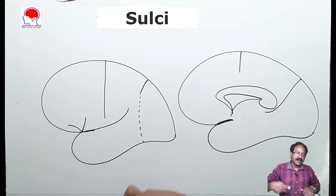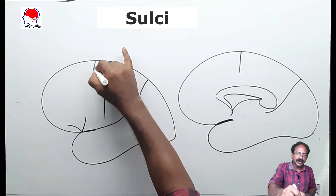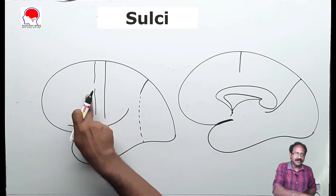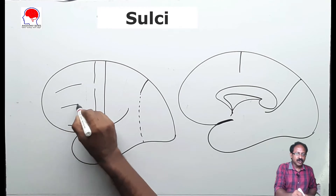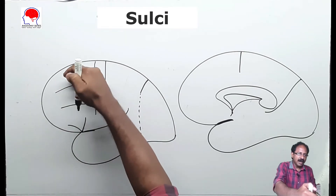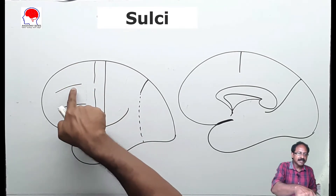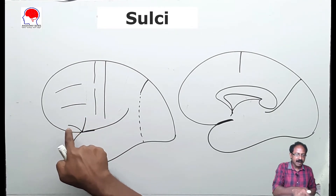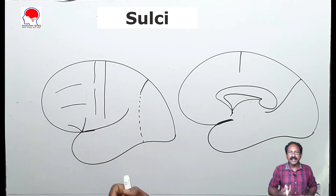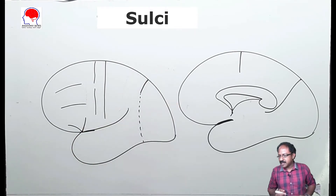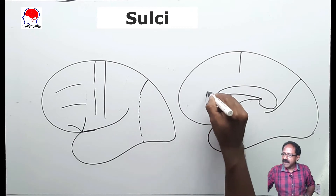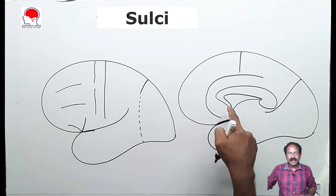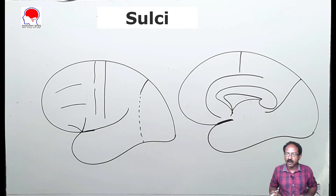In the frontal lobe, in front of the central sulcus, you can see a sulcus named as the pre-central sulcus. You can see two sulci — one above and another below in the frontal lobe — named as the superior and inferior frontal sulcus. Here is the anterior ramus and ascending ramus of the lateral sulcus. On the medial aspect, you can see a sulcus going around the corpus callosum named as the cingulate sulcus, which begins in front of the rostrum of the corpus callosum.